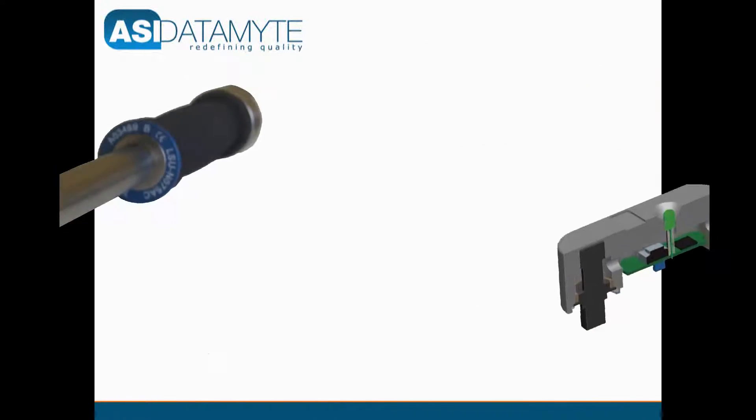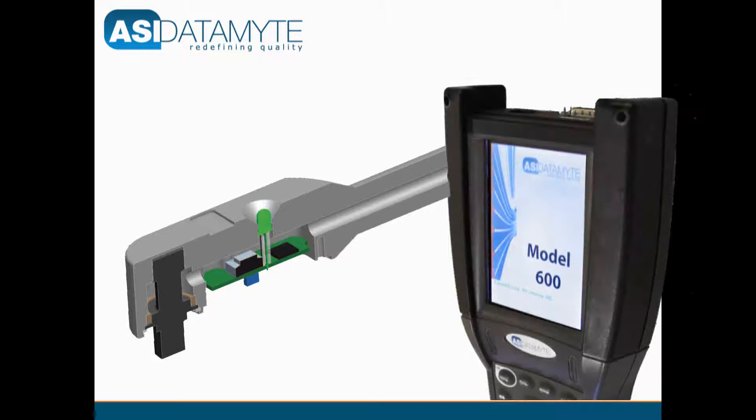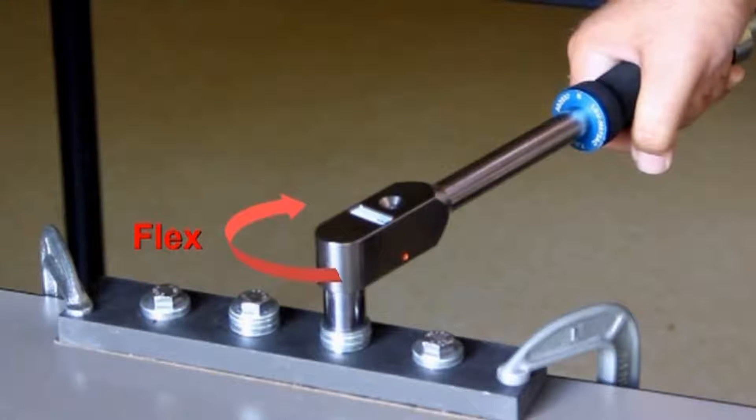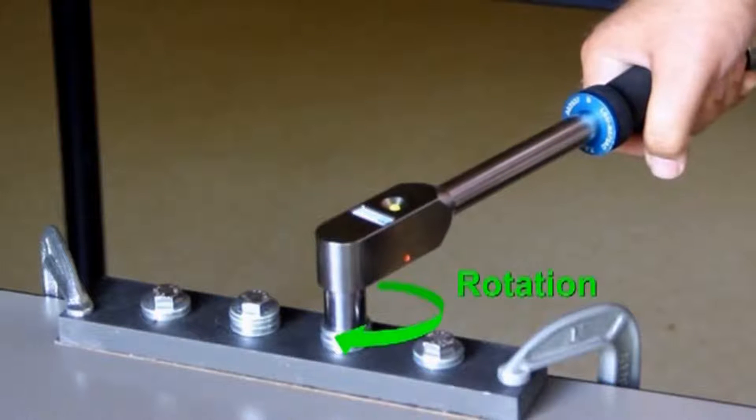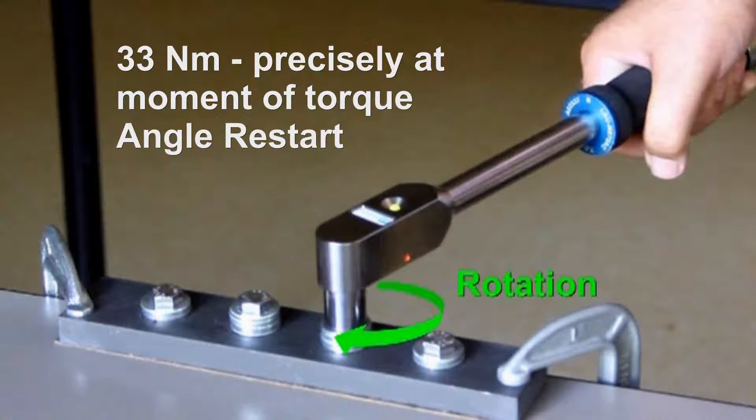The high-resolution solid-state gyro in the head of the wrench allows the model 600 data collector to differentiate between flex in the wrench, socket, and workpiece and actual fastener motion. This means that the residual torque measurement is taken at the instant the fastener begins retightening rotation.